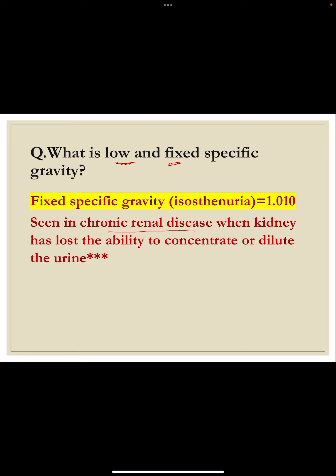In chronic renal disease, in the end stage when the kidney has lost its ability to concentrate urine, the specific gravity of the 24-hour sample becomes fixed and low — between 1.015 to 1.025. This is a viva question.